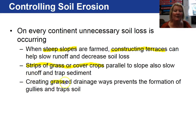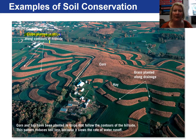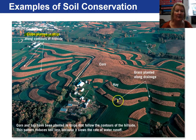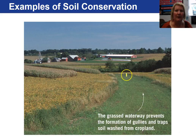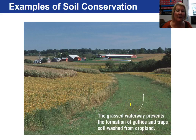Creating grass drainage ways rather than just having soil will prevent the formation of gullies and will help protect the soil. Here we have crops planted in strips paralleling the contours to decrease the runoff of rain. Here we have grass planted along drainage areas — rather than just having soil there which would wash away, the grass will hold it in place. Corn and hay have been planted in strips that follow the contours of the hillside, reducing soil loss because it slows the rate of water runoff. Another example of soil conservation is a waterway planted with grass to prevent the runoff of soil and prevent the formation of rills and gullies.